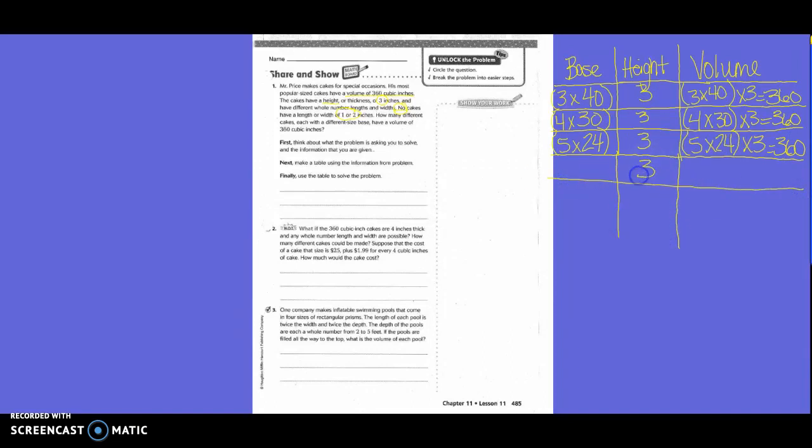Would I use 6? Yes. So 6 times something. So we know 6 times 3 is 18. What times 18 would get us 360? 18 times what gives us 36? 2. So you add a 0, so 20. So 6 times 20 times 3 equals 360.